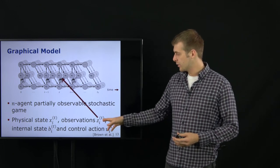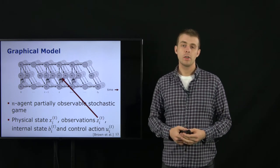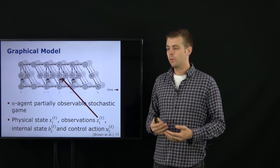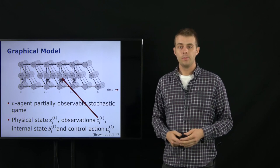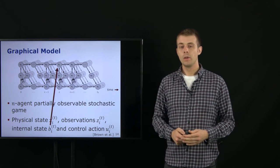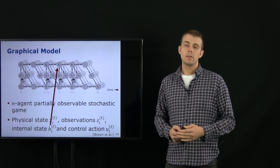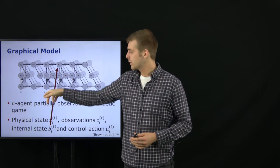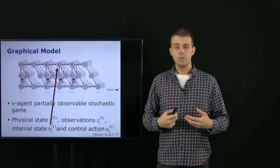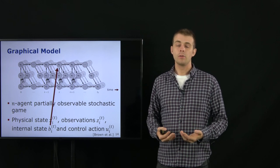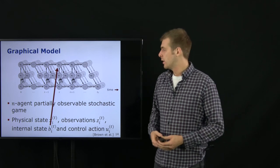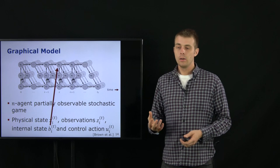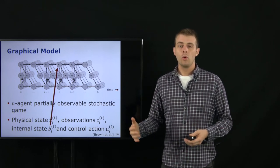What we get from the environment are observations: each agent i gets an observation at time t of its own state but also all other states, showing that we can observe parts of the physical states but not all. After that, each agent i updates its internal state b_i based on the internal state from the previous time step and the received measurement. The internal state represents, for example, the goal state the agent wants to reach, the desired velocity, or the driving style.